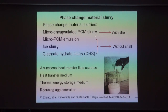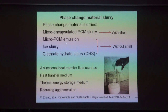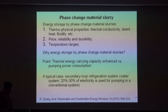In general, there are four kinds of phase change material slurries. With a shell, it is micro-encapsulated PCM slurry. Without a shell, there are three kinds: micro-PCM emulsion, ice slurry, and clathrate hydrate slurry—CHS for short. The reason to use PCM slurry for energy storage is that the thermal energy carrying capacity versus pumping power can be largely enhanced compared to conventional water systems, where 20–30% of electricity is used for pumping.